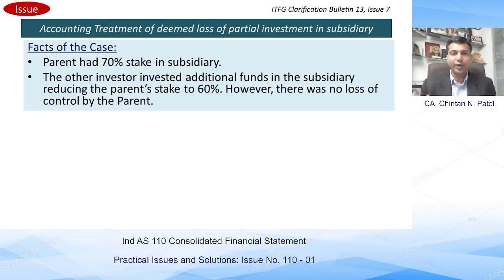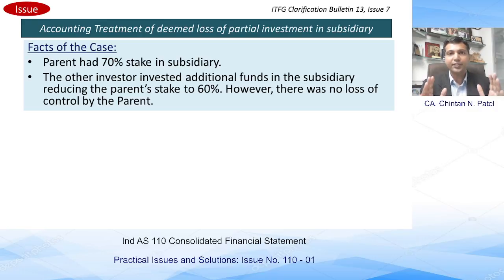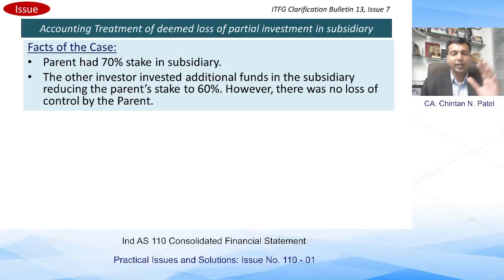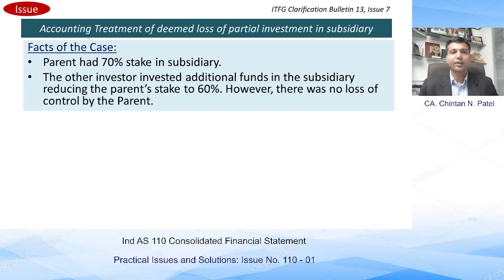Let us look at the case study first. The parent had 70% investment in a subsidiary — that is a control mechanism where a company owns control in another company.